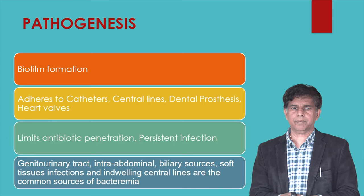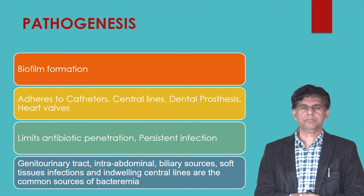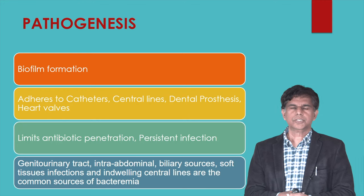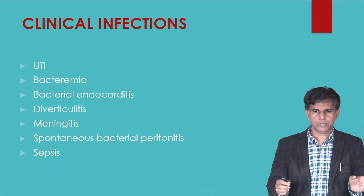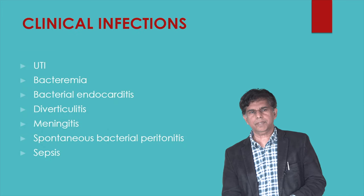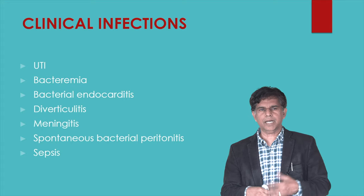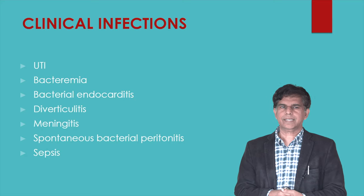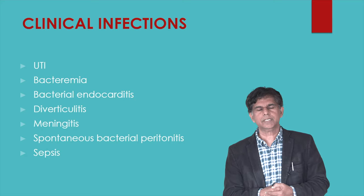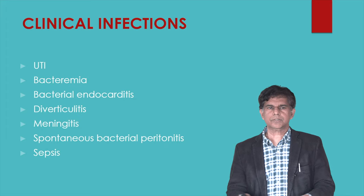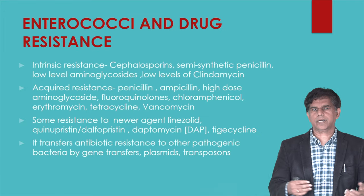Biofilm also limits antibiotic penetration and can cause persistent infection. Common sources of bacteremia include the genital tract, intra-abdominal and biliary sources, and central lines. Clinical infections include genitourinary infections like UTI causing bacteremia, GI infections, bacterial endocarditis, diverticulitis, meningitis, spontaneous bacterial peritonitis in patients with hepatic cirrhosis, and sepsis.